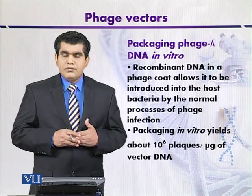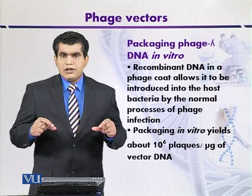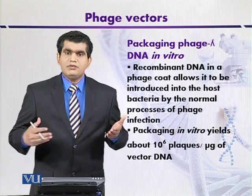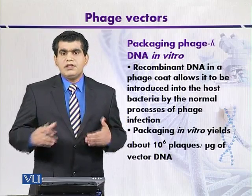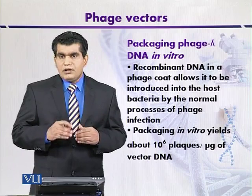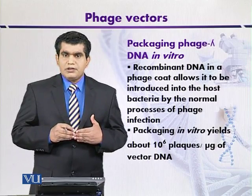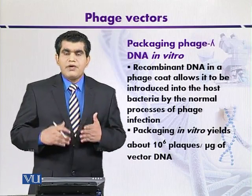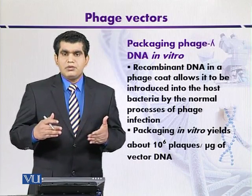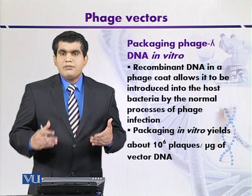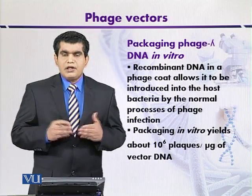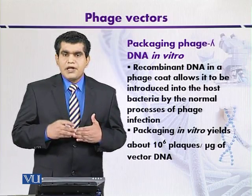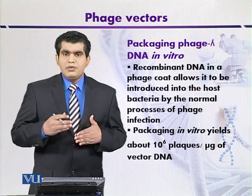On the other hand, if we use an optimum length of the recombinant DNA molecule — that is between 40,000 base pairs to 53,000 base pairs — then we can get viable phage particles. By using modified lambda phages, the frequency again can be increased up to 10^6 plaques per microgram of lambda DNA or vector DNA.